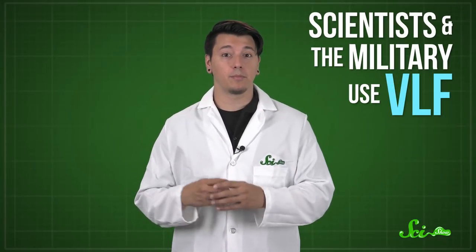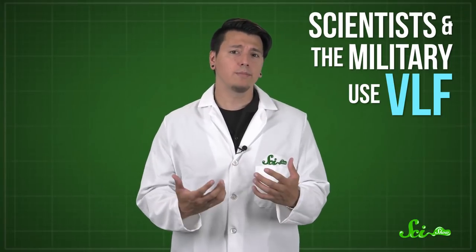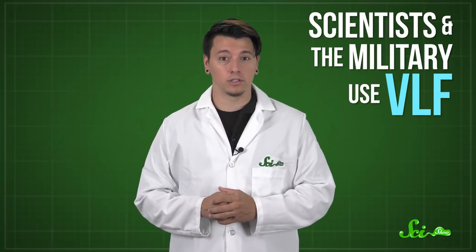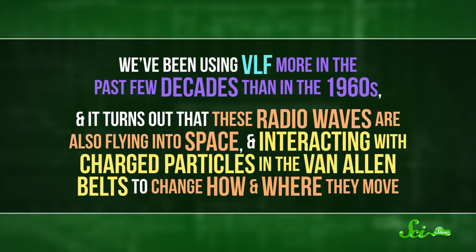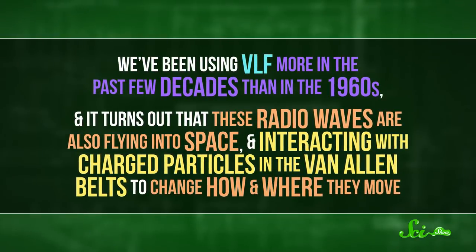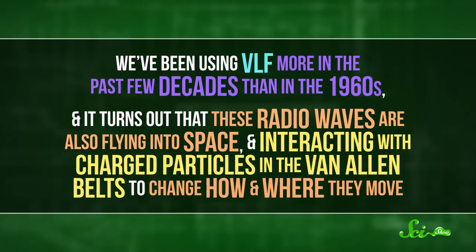The answer is D, very low-frequency communications. A lot of us will never use very low-frequency, or VLF radio waves, which range between 3 and 30 kilohertz. They can't transmit audio like voices, but scientists in the military use them for things like broadcasting coded messages or time signals across long distances to submarines deep below the ocean's surface. We've been using VLF more in the past few decades than in the 1960s, and it turns out that these radio waves are also flying into space and interacting with charged particles in the Van Allen belts to change how and where they move. So basically, there's a VLF bubble surrounding the Earth and pushing back these high-energy belts. We're accidentally changing space weather with our communications way down here.